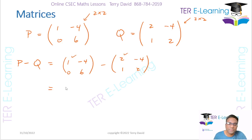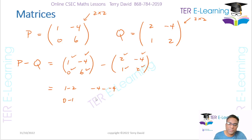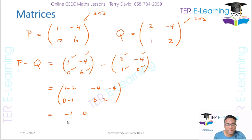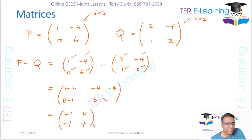So 1 minus 2, then minus 4 minus minus 4, then 0 minus 1, and then 6 minus 2. 1 minus 2 gives me minus 1. Minus 4 minus minus 4 is the same as minus 4 plus 4, so this is 0. 0 minus 1 is minus 1. And 6 minus 2 gives me 4. So this is how we subtract matrices.